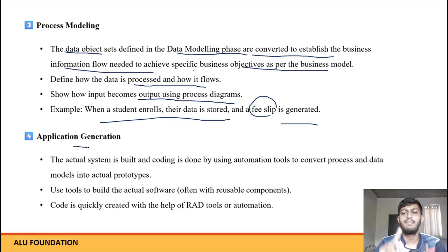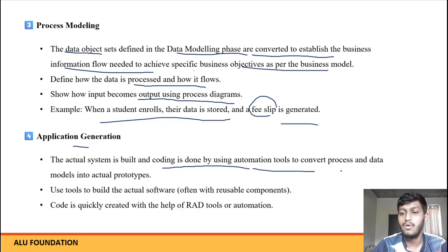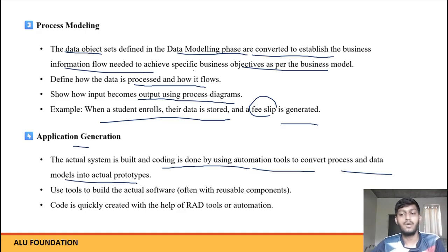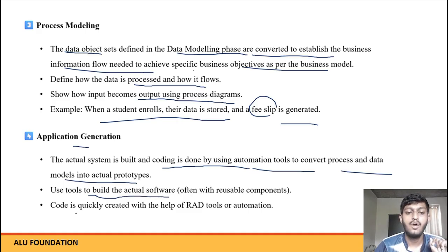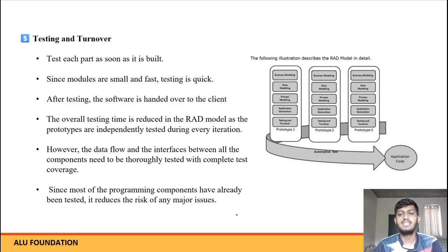Application generation — jo bhi humne process dekha, data model dekha, business analysis, jo bhi information liya, toh humne ek design banaaya hai, toh hum ek application abhi develop kar lenge. In the application generation phase, the actual system is built — coding is done by using automation tools to convert process and data models into an actual prototype. Jo bhi process model se, data model se convert karne ke liye, hum ek automation tool use karte hain, to convert process model and data model into the actual prototype — matlab coding mein. Use tools to build actual software — hum tools use karte hain software banane ke liye. Codes are quickly created with the help of RAD tools.